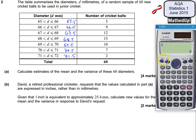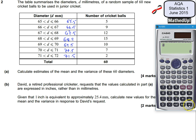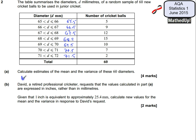Now I want to do a statistical calculation, so I'm going to use shift and stat and choose number 5. The mean is given by x-bar, so that's number 2. That tells me the mean of my cricket ball diameters is 68.25. Looking at the values, that seems sensible, so my mean is equal to 68.25 millimetres.